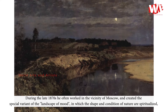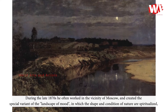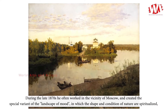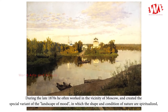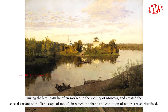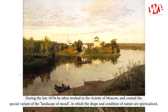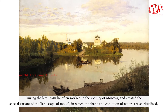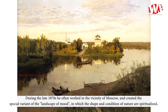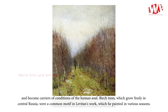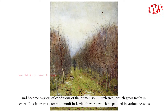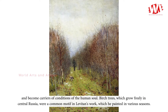During the late 1870s he often worked in the vicinity of Moscow, and created the special variant of the landscape of mood, in which the shape and condition of nature are spiritualized and become carriers of conditions of the human soul.